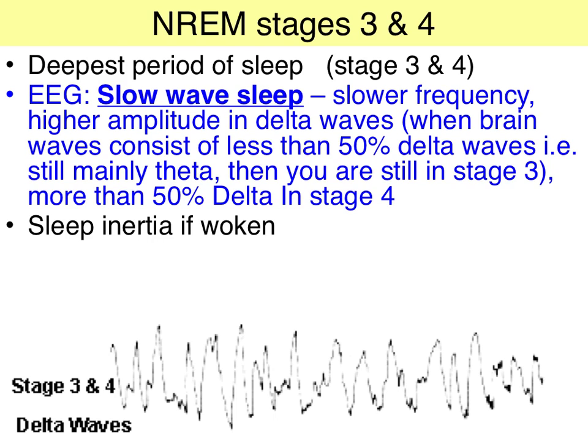The difference between stage 3 and stage 4 is that stage 3 is more theta than delta brain waves, whereas stage 4 is more delta than theta. A key characteristic of this phase of sleep is that if we are woken, we will experience sleep inertia, where it will take us several minutes — up to 10 — to orient ourselves, due to the lack of brain activity.